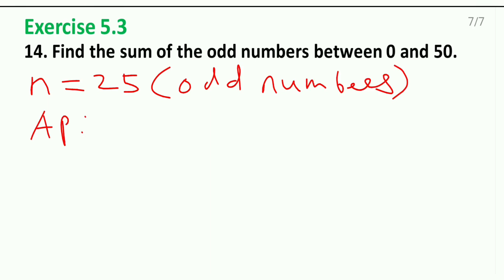Now I'll write down AP. First odd number is 1, 3, 5, and so on, and the last one will be 49. You know number of terms, you know the first term, you know the last term.